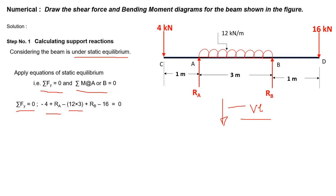The UDL converted to a concentrated force is 36 kN acting at mid-span of AB. Adding plus RB (upward) and minus 16 kN, and summing all forces, we get RA + RB = 56 kN. This is equation (A). Since there are two unknowns, we need a second equation based on taking moments about A equal to zero.